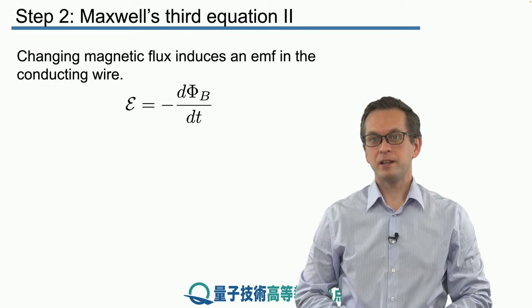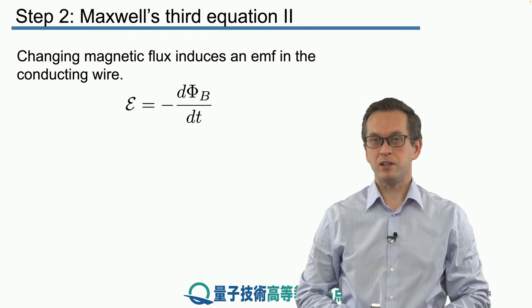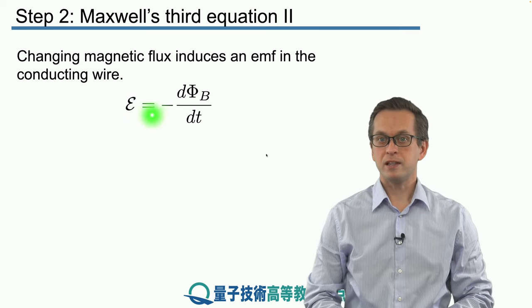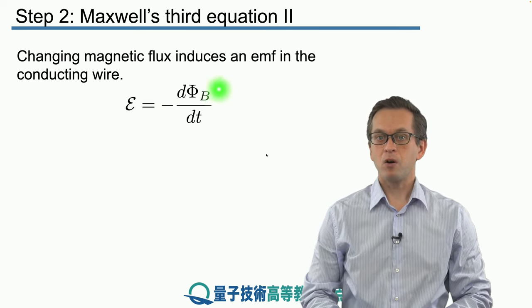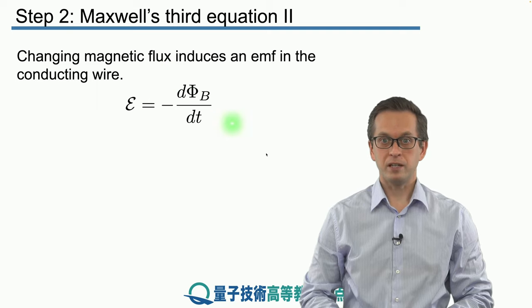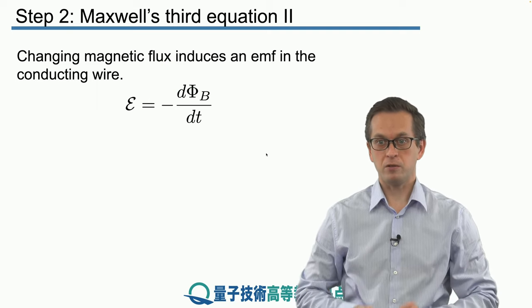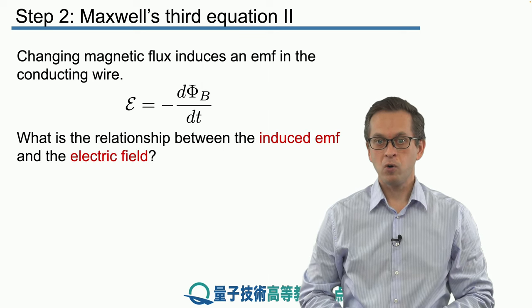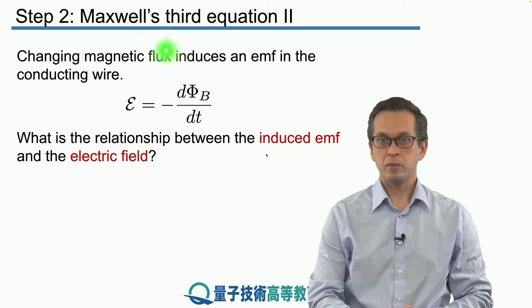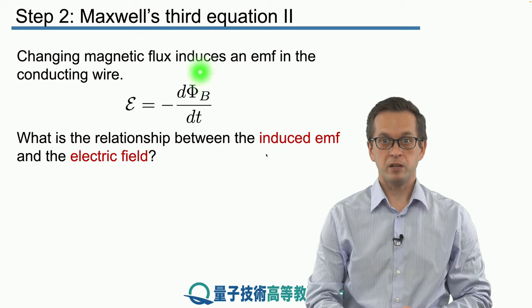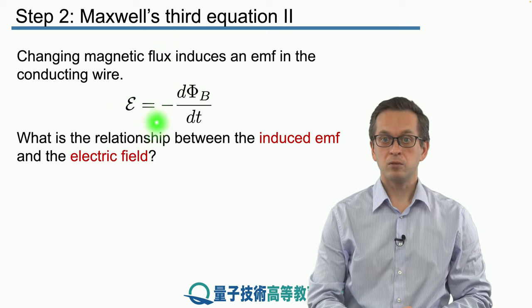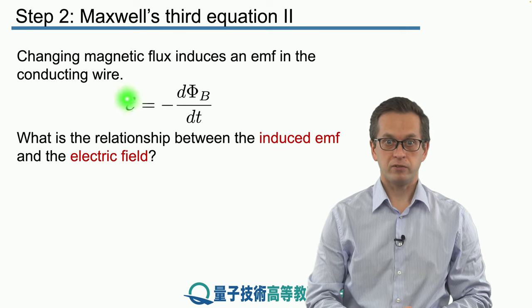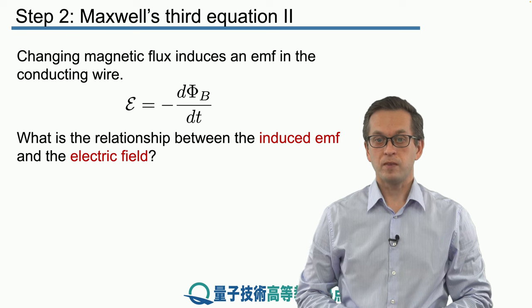We saw that the changing magnetic flux induces an EMF in the conducting wire. The relationship is that the induced EMF equals the negative of the rate of change of the magnetic flux going through the area of the wire. Our goal is to relate this magnetic flux, which can be expressed in terms of the magnetic field, to an electric field, which is some function of the EMF.